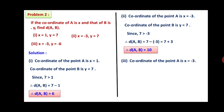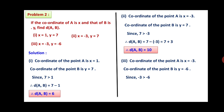Third: coordinate of point A is X equals minus 3, and coordinate of point B is Y equals minus 6. We know that minus 3 is greater than minus 6. Therefore, distance between A and B equals minus 3 minus (minus 6), which equals minus 3 plus 6. Therefore, distance between A and B is equal to 3.